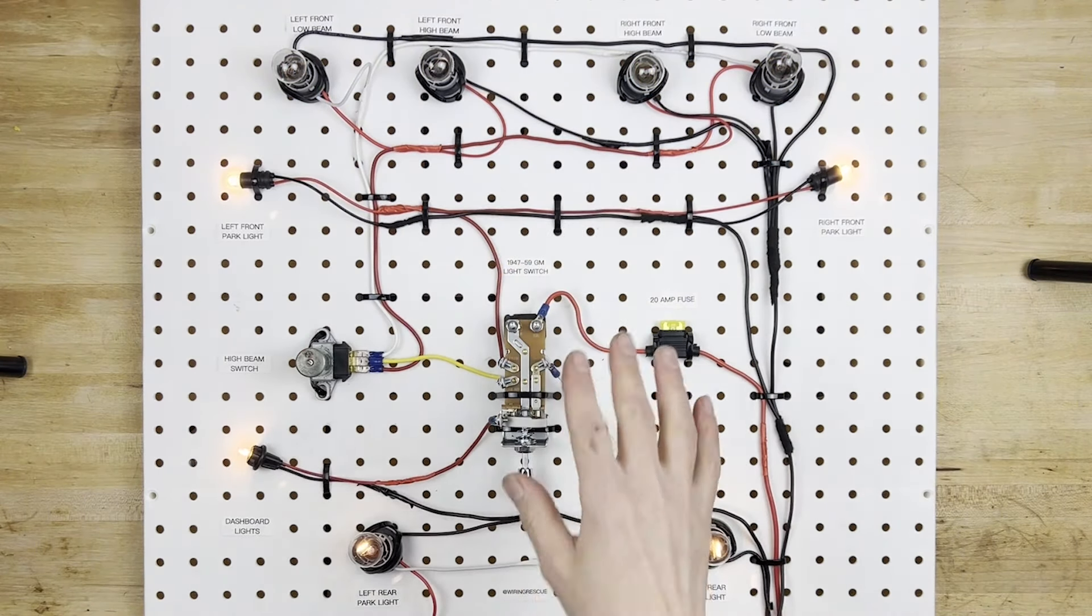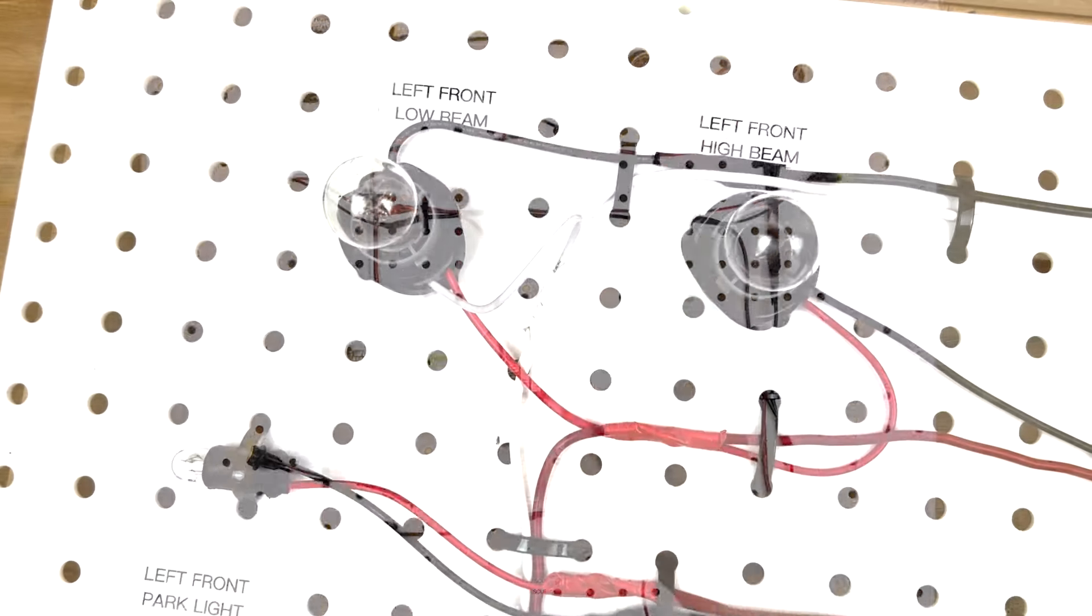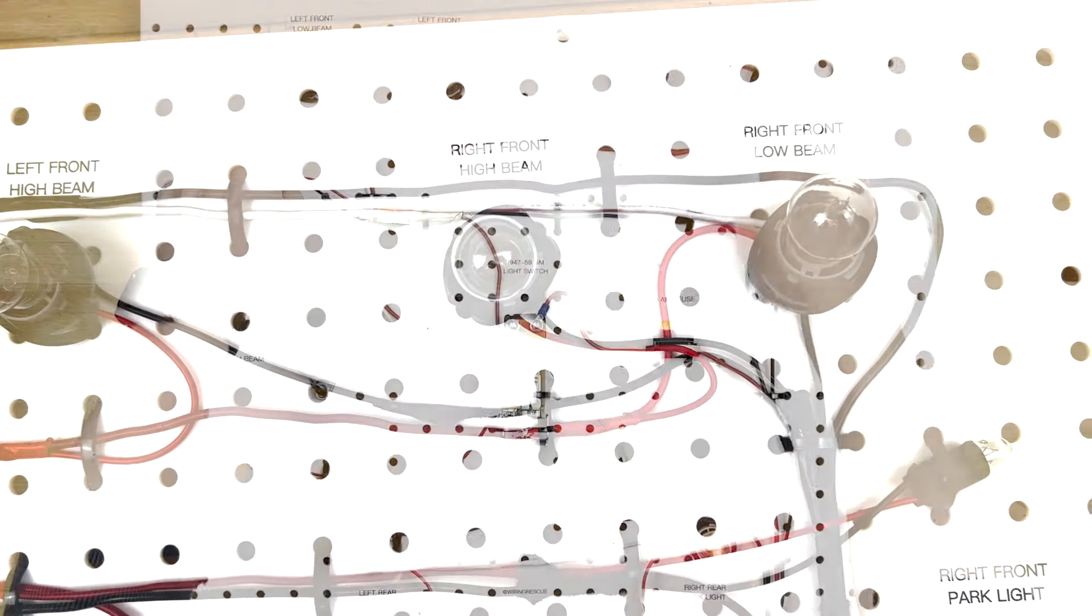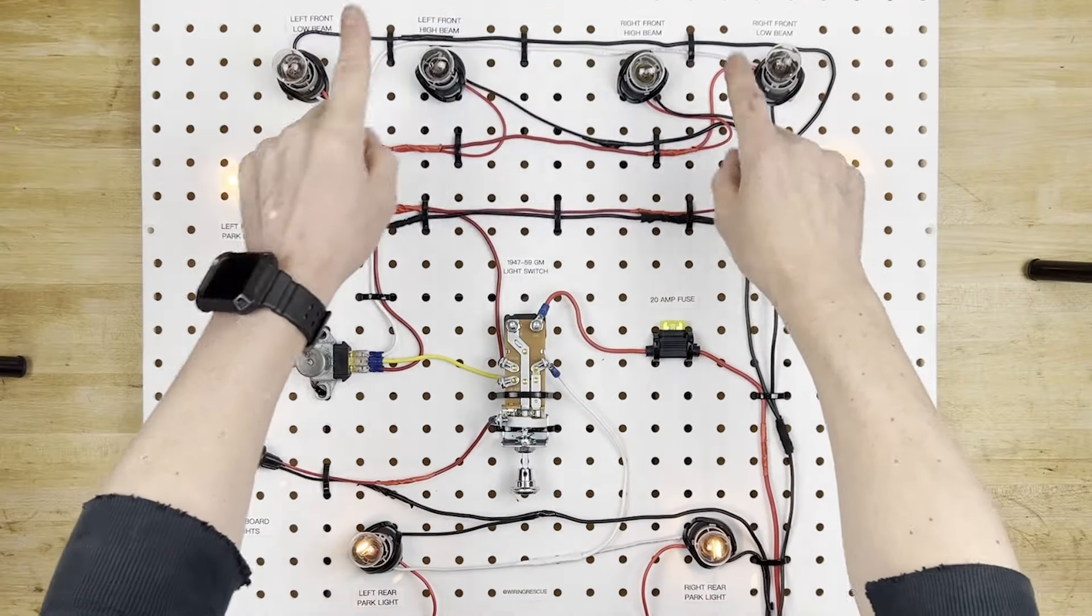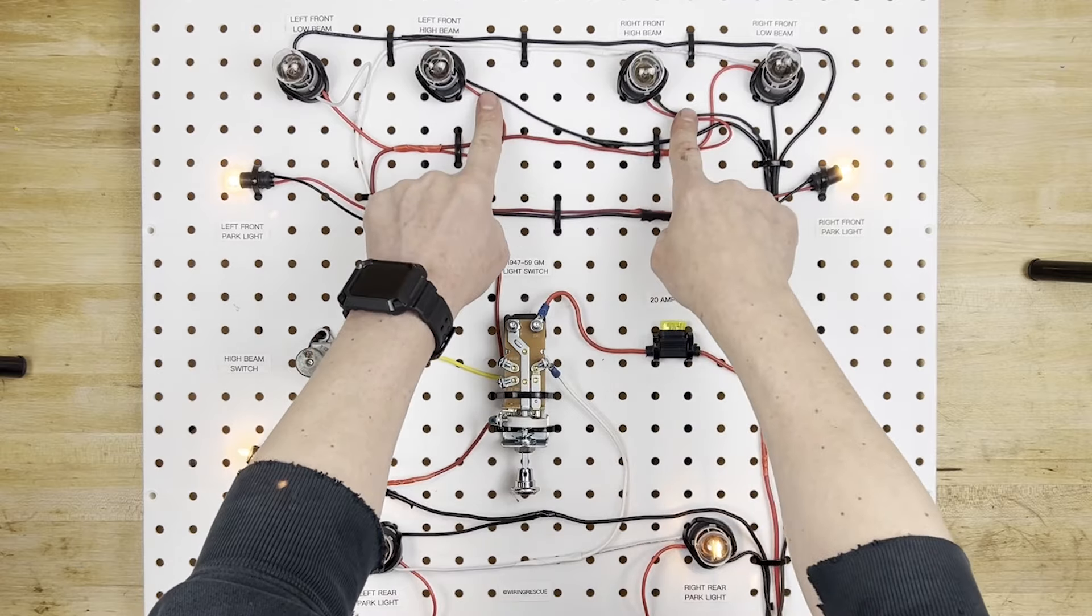Now the headlights are actually easier than they look. We have four of them, two of them are low beams, two of them are high beams. You can see low beams are on the outsides, and they have three wires each. The centers are high beams, and they have two wires each.